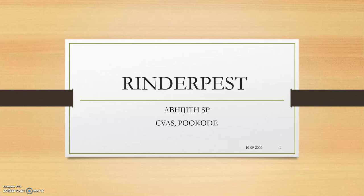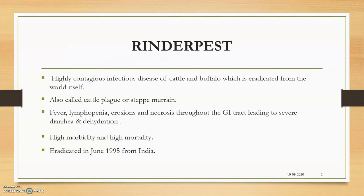We are moving to the second viral disease of cattle: Rinderpest. It is an ancient, highly contagious, infectious viral disease of cattle and buffalo which has been eradicated from the world. Also called 'cattle plague' because of the very high mortality rate — in the early 1800s, nearly 96% mortality was recorded.